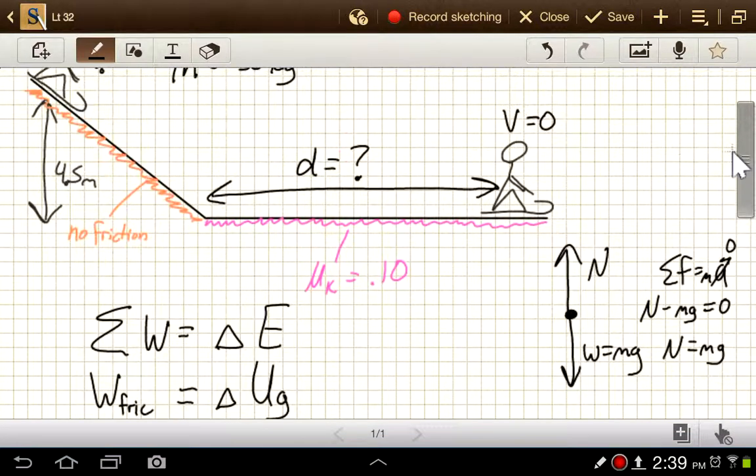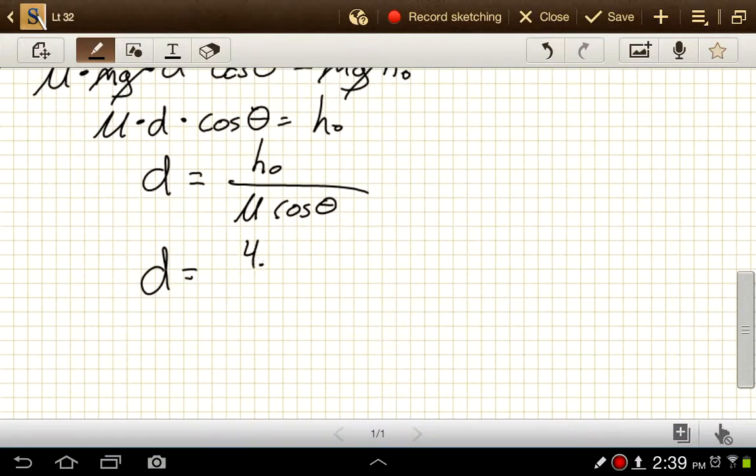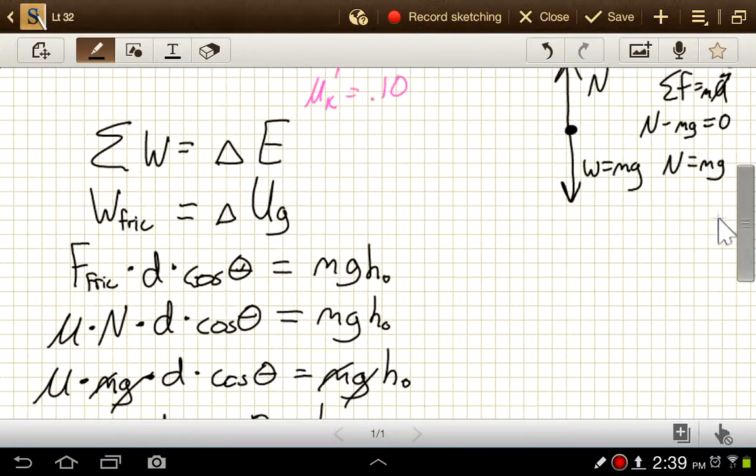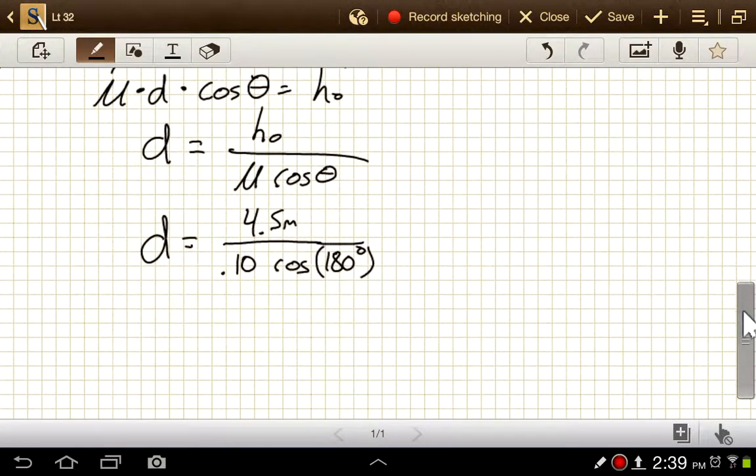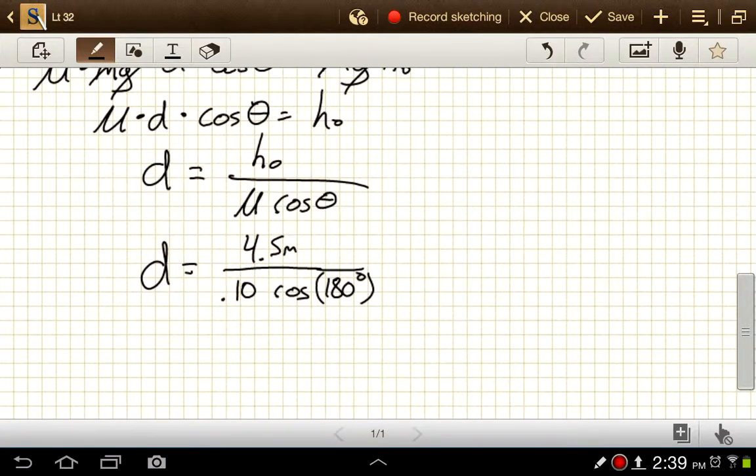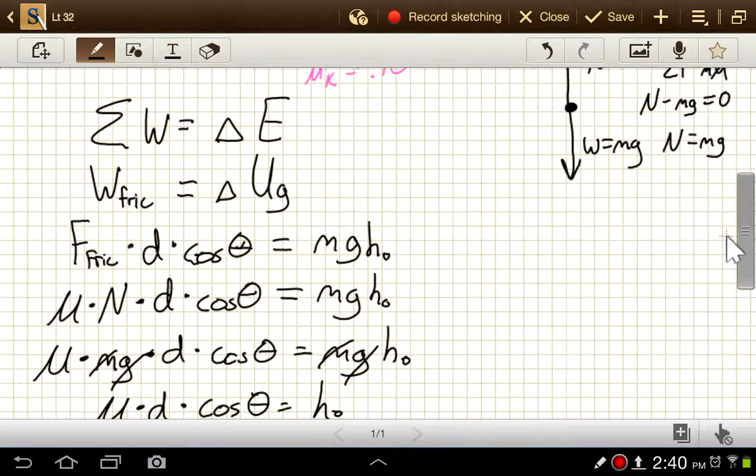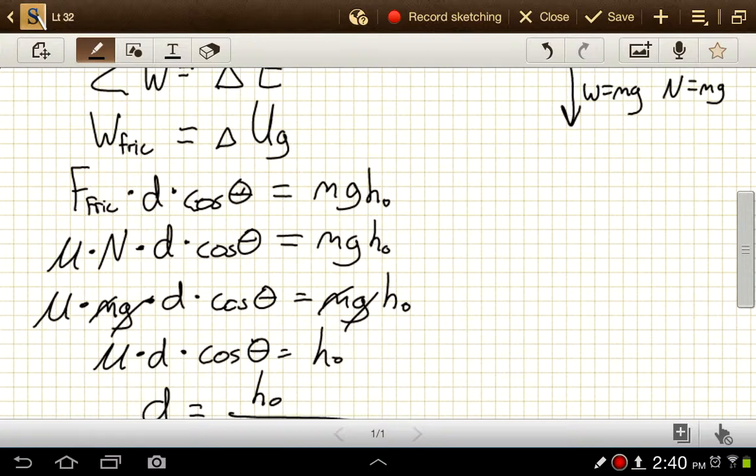So the h naught was 4.5 meters. And mu was 0.10. And cosine of 180 degrees. And let's see, our height should be a negative value, negative 4.5, because we're going down by 4.5 meters. So that was delta UG.